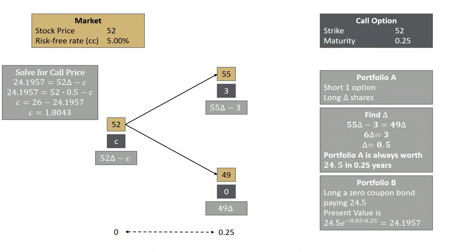The market starts at 52, so the stock is trading at 52 today. Risk-free interest rates are 5% continuously compounded. We assume the stock could go from 52 up to 55, or 52 down to 49. We want to price a call option with a strike of 52 and a maturity of 0.25 years.